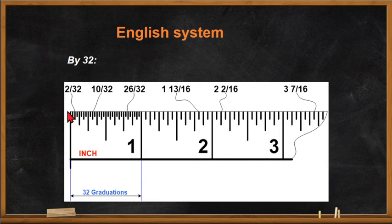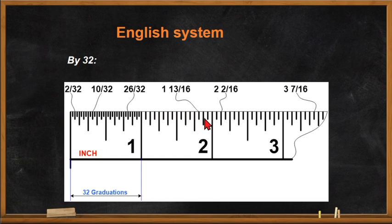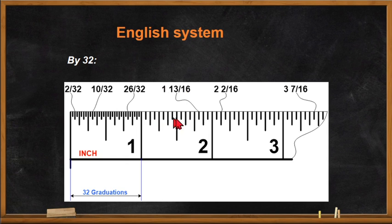By 32 means one inch is divided into 32 lines or graduations. We read them as 1/32, 2/32, 3/32, 4/32, up to 32/32 which equals one. For example, if you count from one and get to the 13th line in a by-16 rule, that is 1 and 13/16 — reading: 1 for the inch, 13 for the 13th line, over 16 for the number of graduations. You read the whole number, then the line count, over the total graduations.